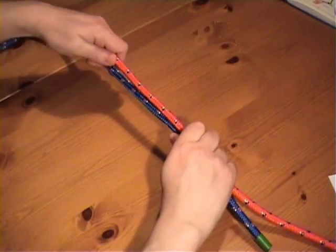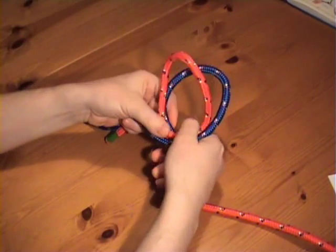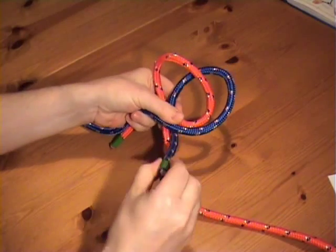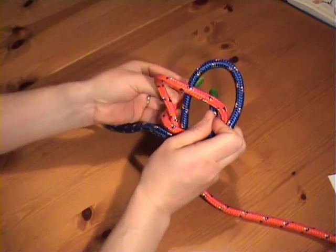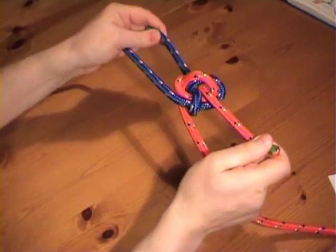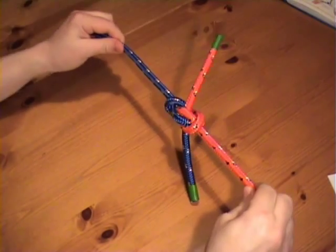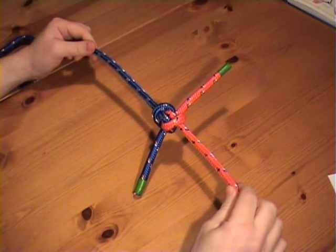Then we form a crossing turn and tuck the working ends through the crossing turn in opposite directions. And there is the rigger's bend.